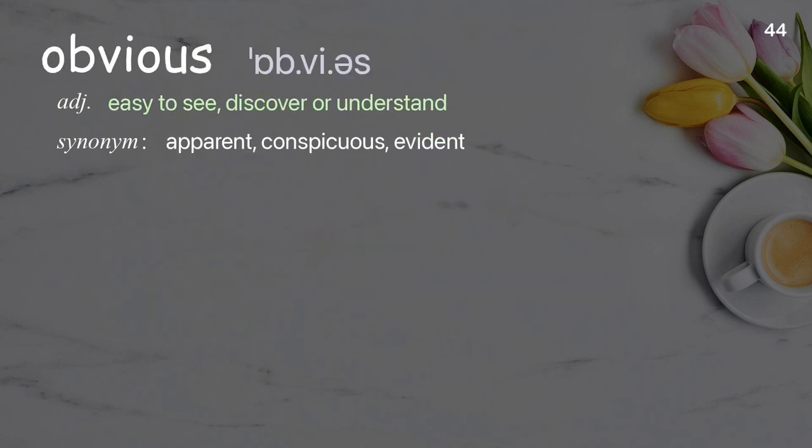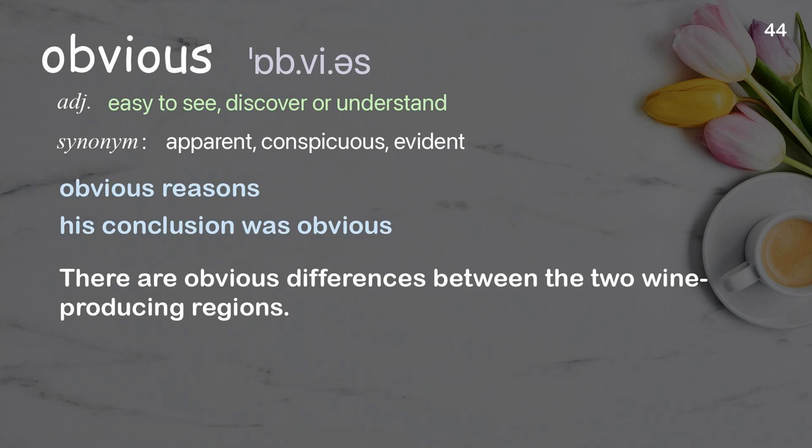Obvious: easy to see, discover, or understand. Examples: obvious reasons, his conclusion was obvious. There are obvious differences between the two wine-producing regions.